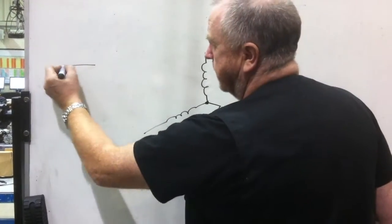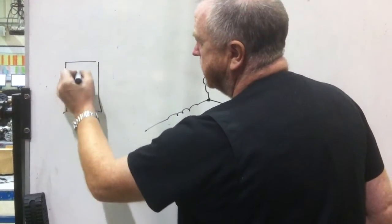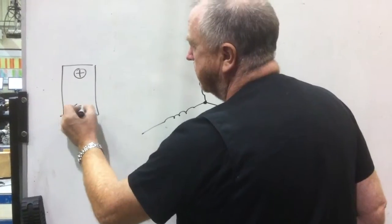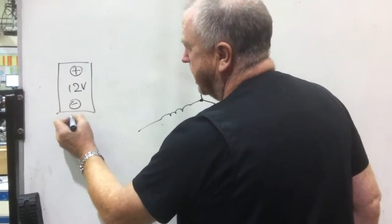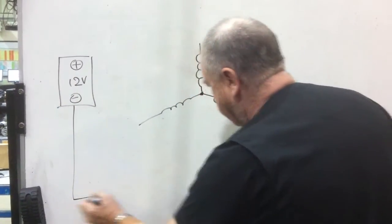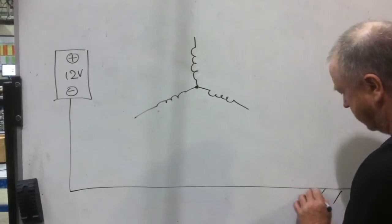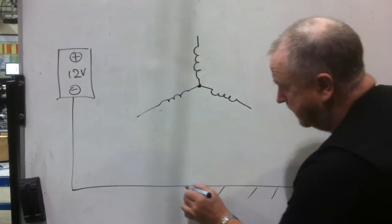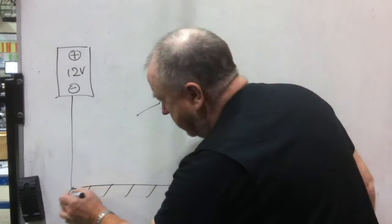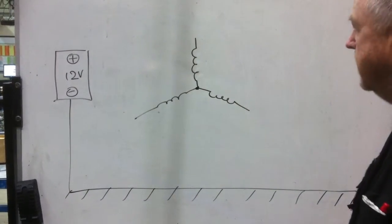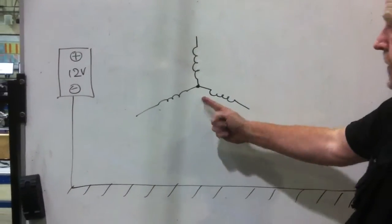The function of the alternator is to supply all electrical loads, so it's connected back to the vehicle battery. And one side of the vehicle battery is connected, bolted directly to the chassis of the vehicle. Now, in order to make electricity, I need 3 things. So there's my conductor, the next thing I need is a magnet.